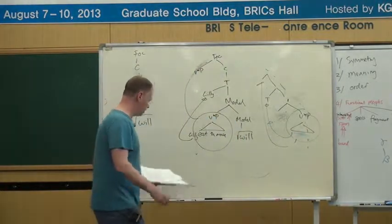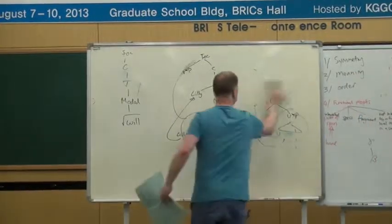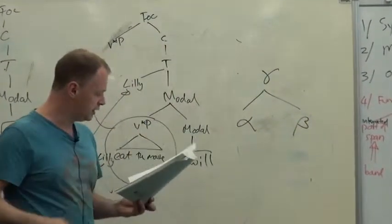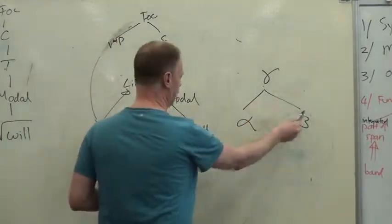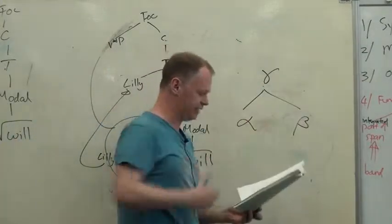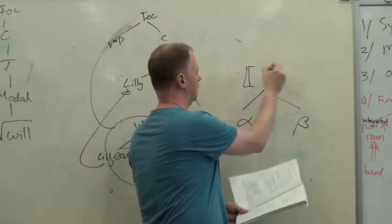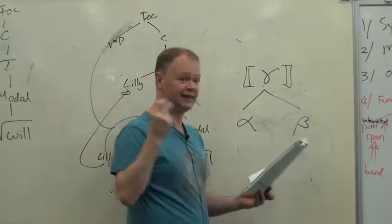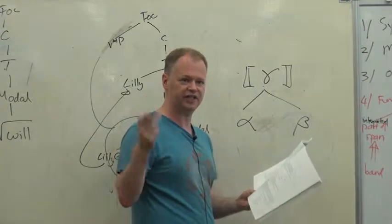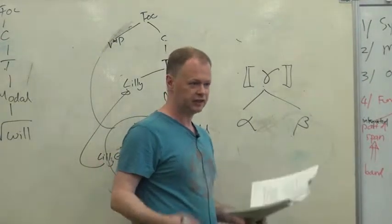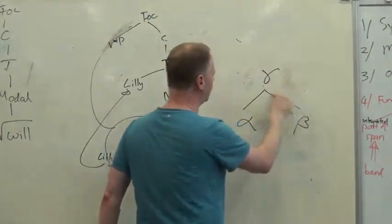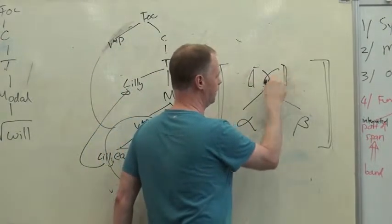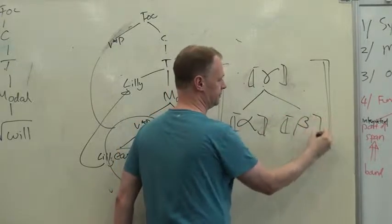It says: in a structure where gamma is the mother of alpha and beta, if beta is the internal complement of gamma, where the label of gamma is greater than the label of beta, then the interpretation of gamma is the interpretation of the label of gamma applied to the interpretation of beta, applied to the interpretation of alpha that exists. What we're really saying is that the interpretation of the whole thing is built up out of the interpretation of this label plus the interpretations of these constituent parts.